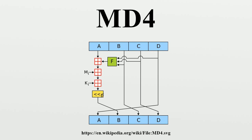In August 2004, Wang et al. found a very efficient collision attack alongside attacks on later hash function designs in the MD4, MD5, SHA-1, and RIPEMD family. This result was improved later by Sasaki et al., and generating a collision is now as cheap as verifying it.